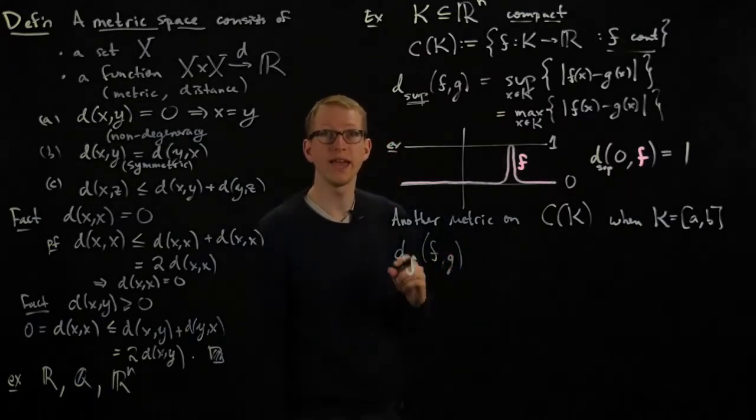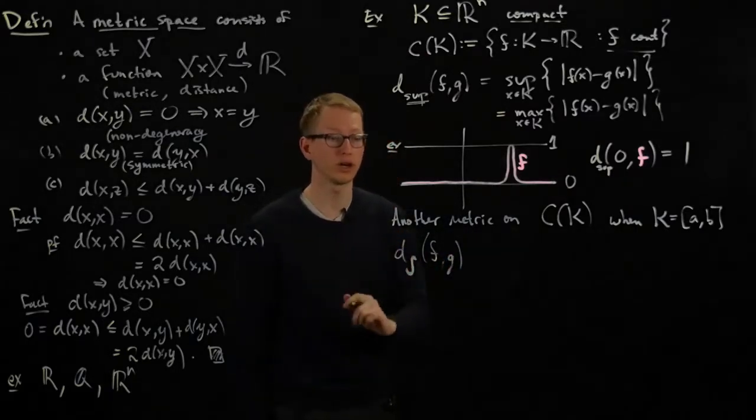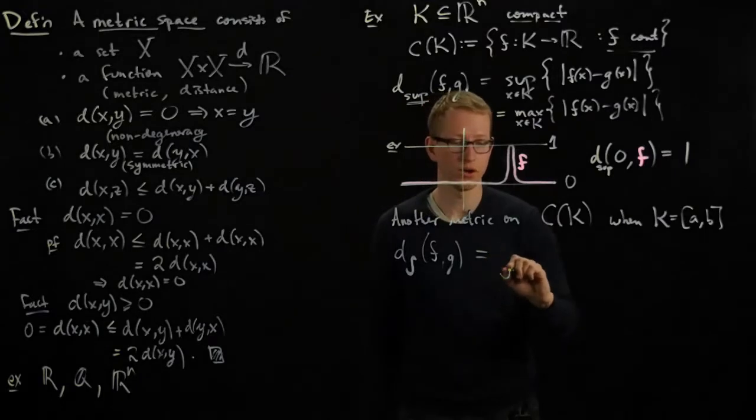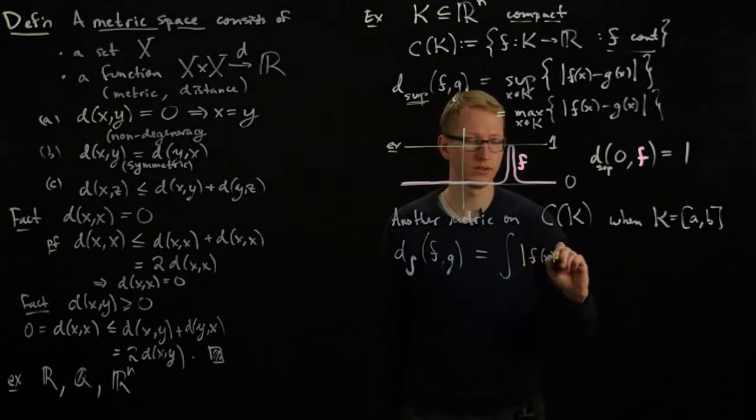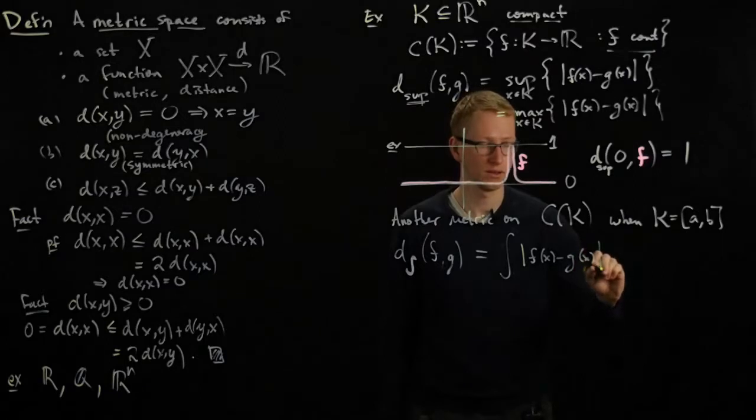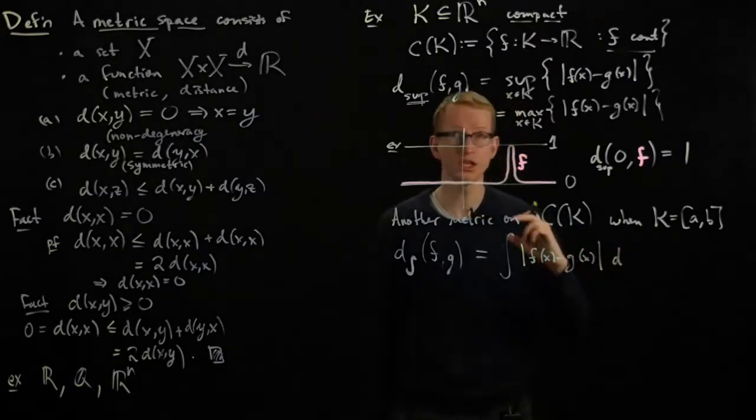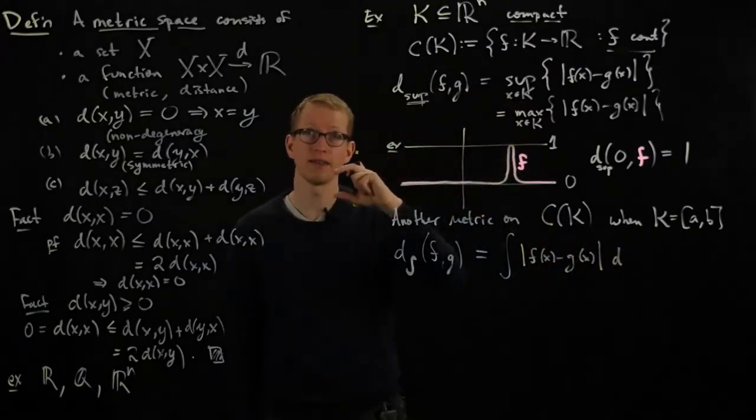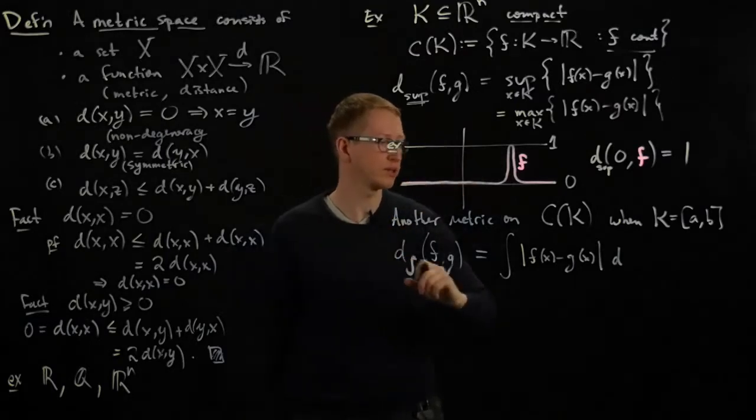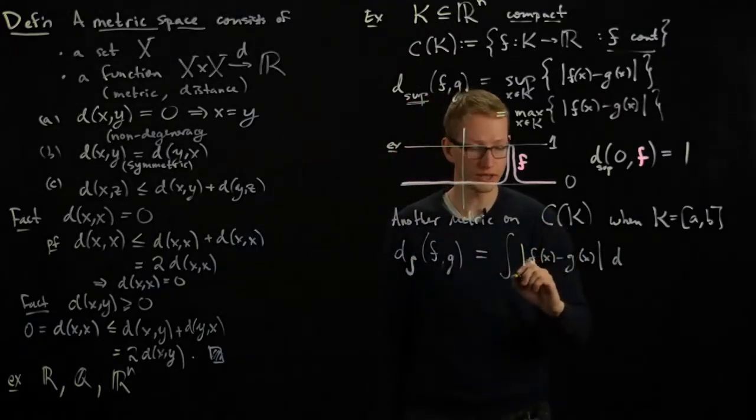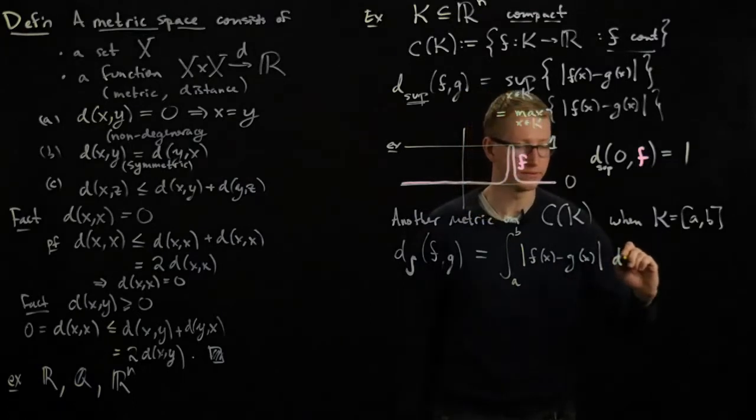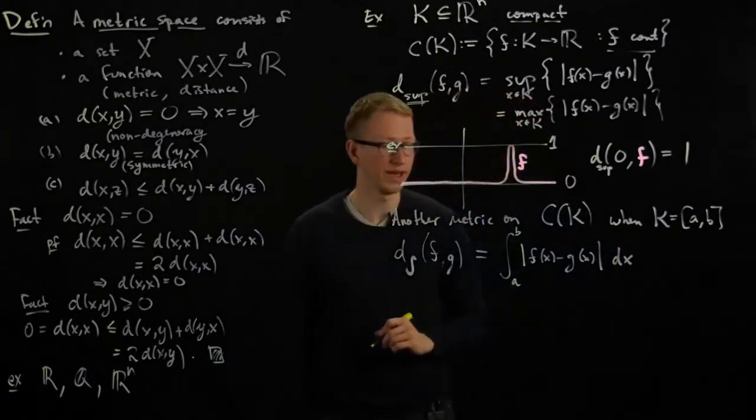to be the area between the two curves. So all we do is we take the difference between these two functions, and then we calculate each of their separations, and then we integrate over that. So we're not just calculating the maximum, we're actually integrating this entire distance function over all x.